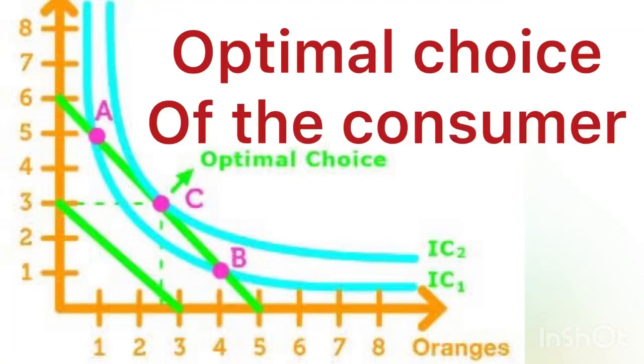Plus 2 Economics, Micro Economics, Chapter 2, Theory of Consumer Behavior. Optimal Choice of the Consumer.